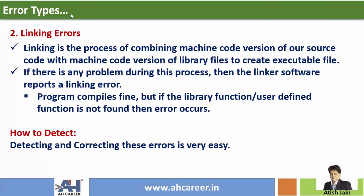Second type of error: linking errors. Linking is the process of combining machine code versions of our source code file with machine code versions of our library files to create an executable file. If there is any problem during this process, the linker software reports a linking error. Detecting and correcting these errors is very easy.